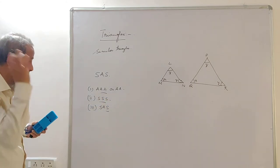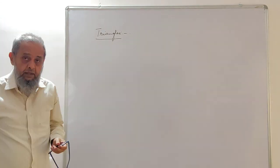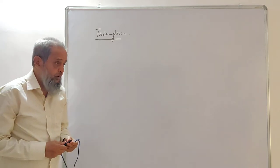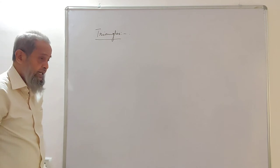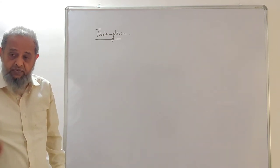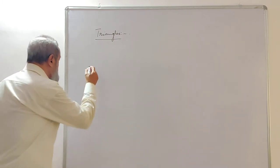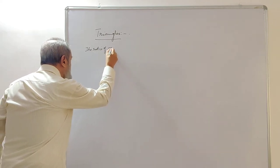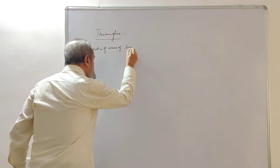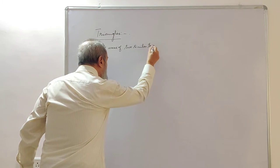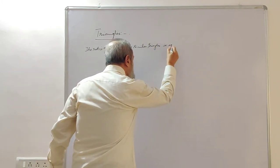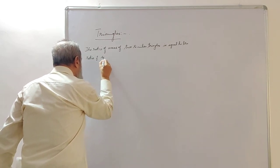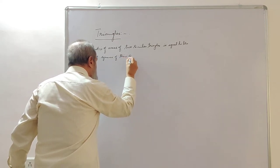The next property of triangles we should know is that the ratio of the areas of any two similar triangles is equal to the ratio of the squares of their corresponding sides. This is a theorem which can be proved: the ratio of areas of two similar triangles is equal to the ratio of the squares of their corresponding sides.